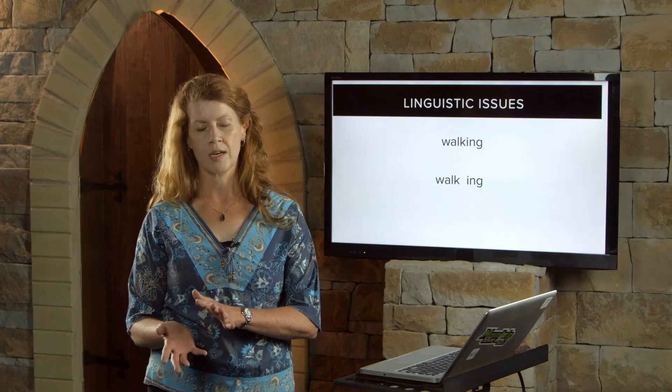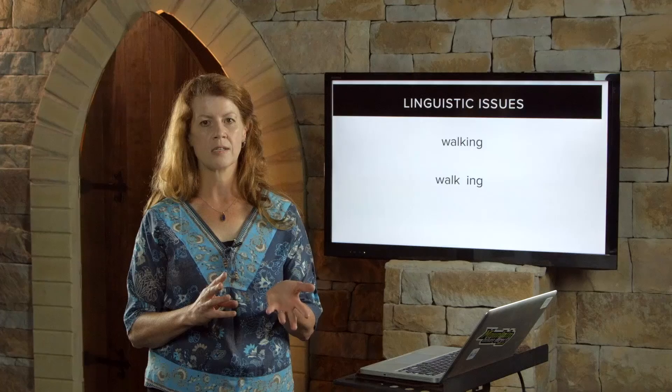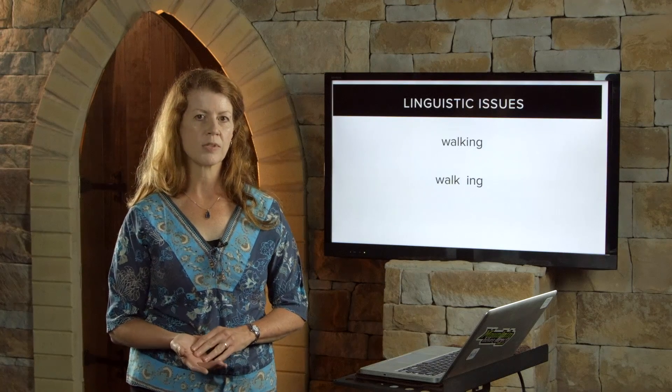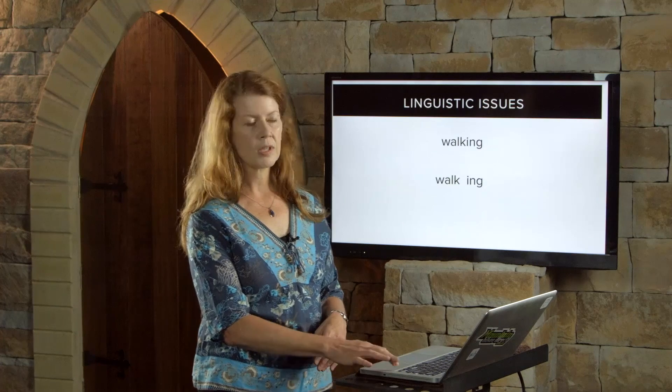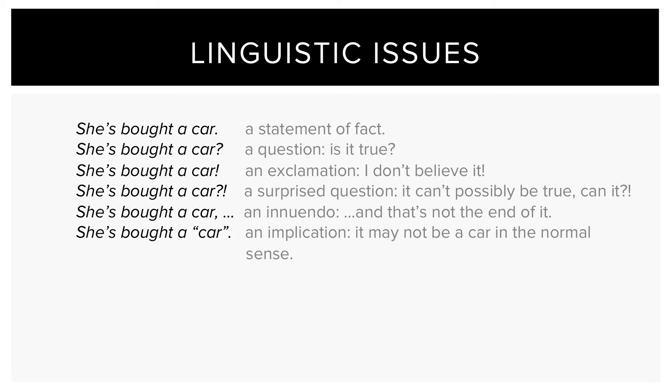In many tonal languages there are words that would mean exactly the same thing if tone wasn't represented in the written language. Chinese is a tonal language but it uses characters that represent meaning logographically rather than phonemically. In English, intonation is represented in the written language by punctuation — the sentence 'she's bought a car' can change significantly by the punctuation included, becoming a question, an exclamation, an innuendo, or an implication, all indicated simply by punctuation.